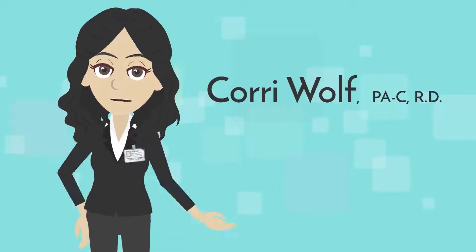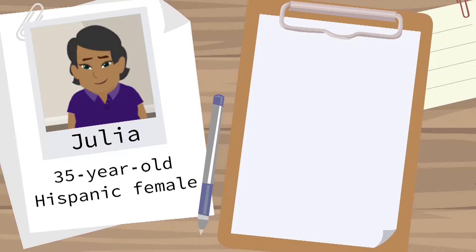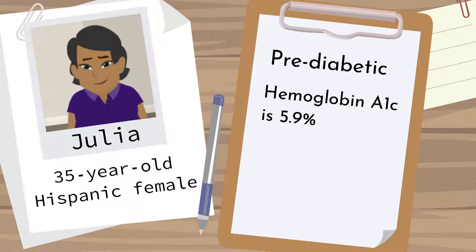Hi, I'm Cori Wolf. I'm an associate professor at New York Institute of Technology. Julia, a 35-year-old Hispanic female, presents reporting that blood work done for a life insurance physical indicated she was pre-diabetic due to her hemoglobin A1c being 5.9%. She hasn't seen a healthcare provider in five years.